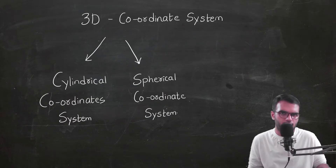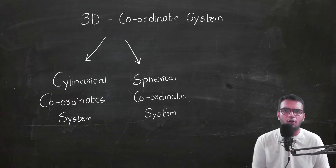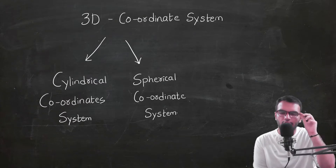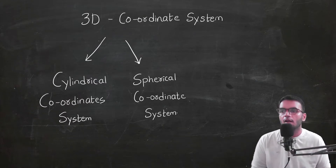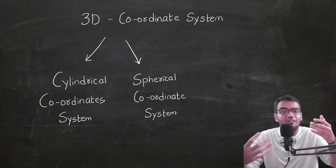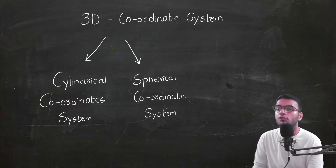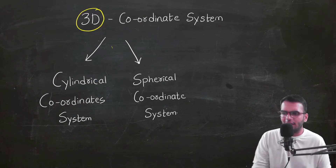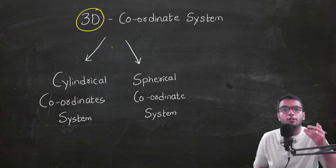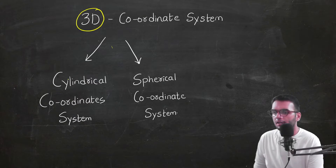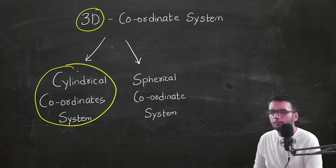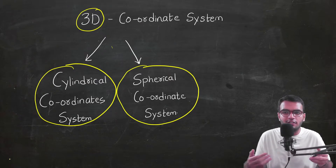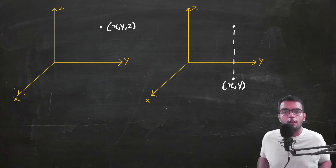What we studied so far was in two dimensions using r and theta. Now let us extend the same polar coordinate system into three-dimensional form. In 3D coordinates we consider two types of coordinate systems: the cylindrical coordinate system and the spherical coordinate system. Let us start with the cylindrical coordinate system.